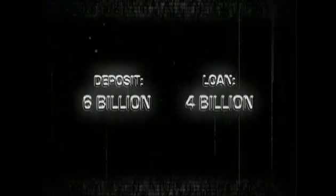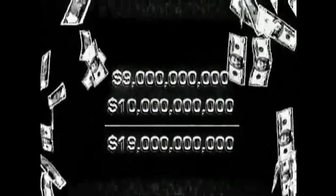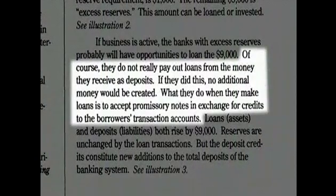Now, it is logical to assume that this $9 billion is literally coming out of the existing $10 billion deposit. However, this is actually not the case. What really happens is that the $9 billion is simply created out of thin air on top of the existing $10 billion deposit. This is how the money supply is expanded. As stated in Modern Money Mechanics, the banks do not really pay out loans from the money they receive as deposits. If they did this, no additional money would be created. What they do when they make loans is to accept promissory notes in exchange for credits to the borrower's transaction accounts. In other words, the $9 billion can be created out of nothing simply because there is a demand for such a loan and a $10 billion deposit to satisfy the reserve requirements.